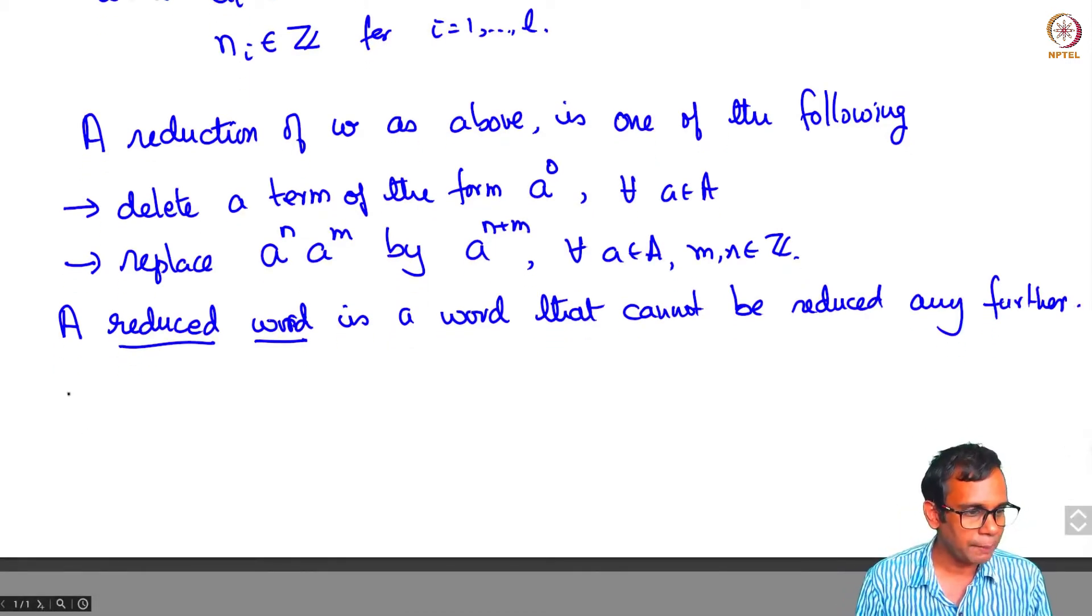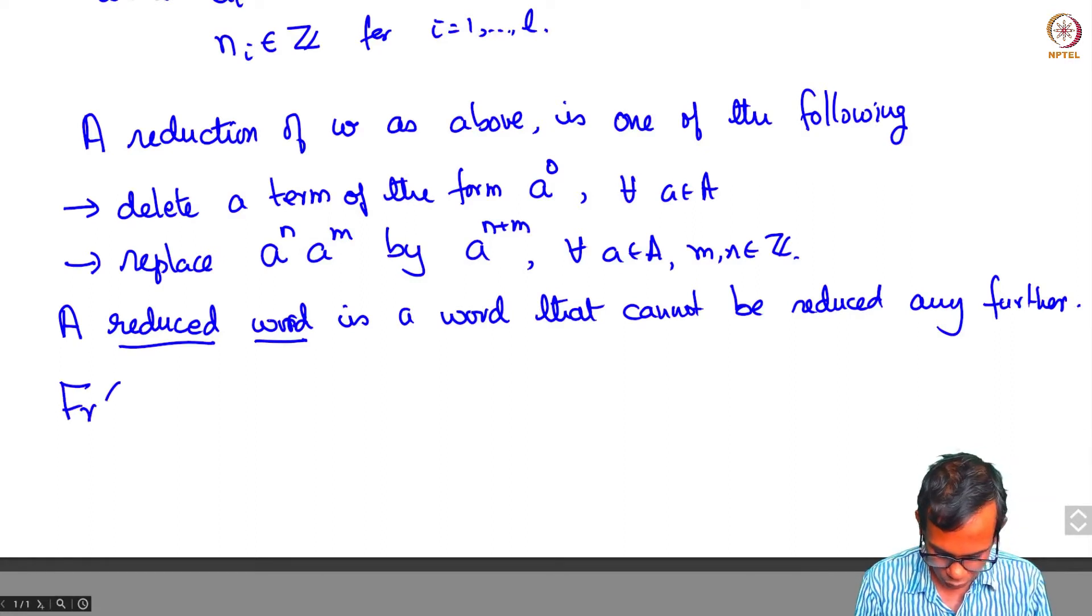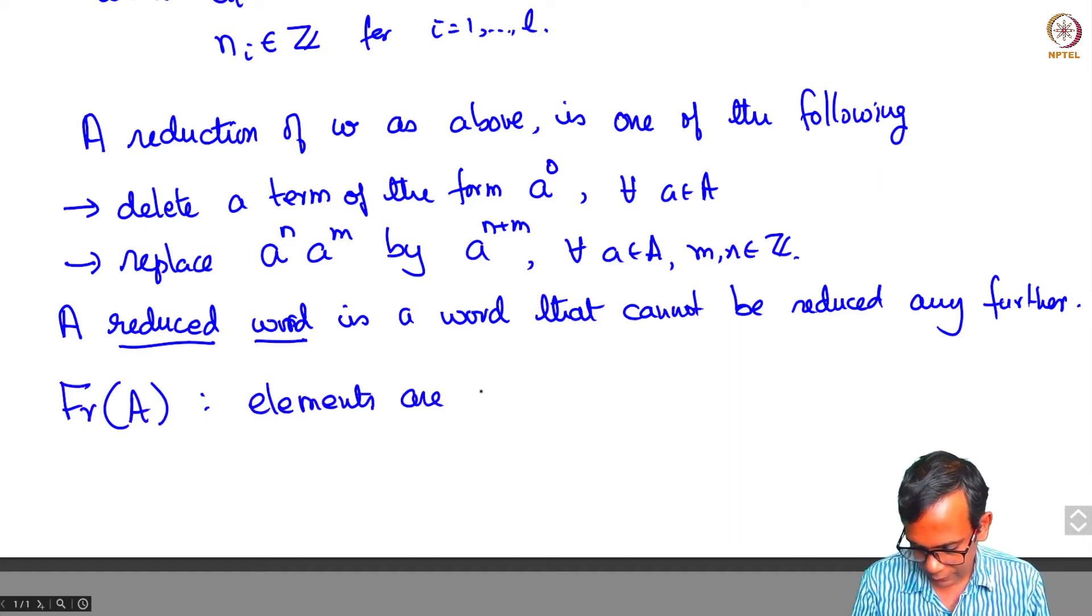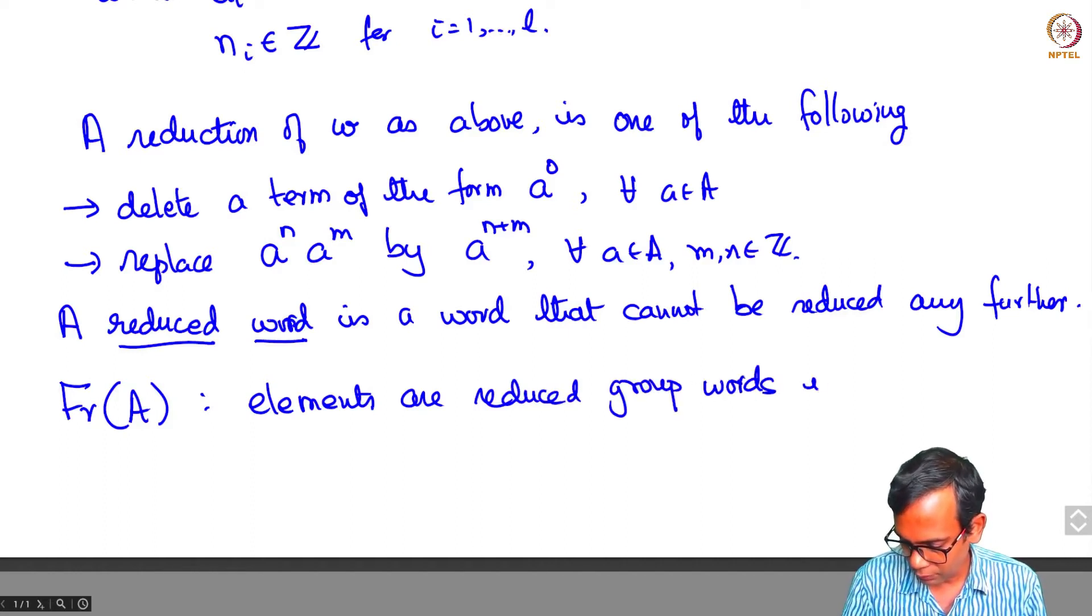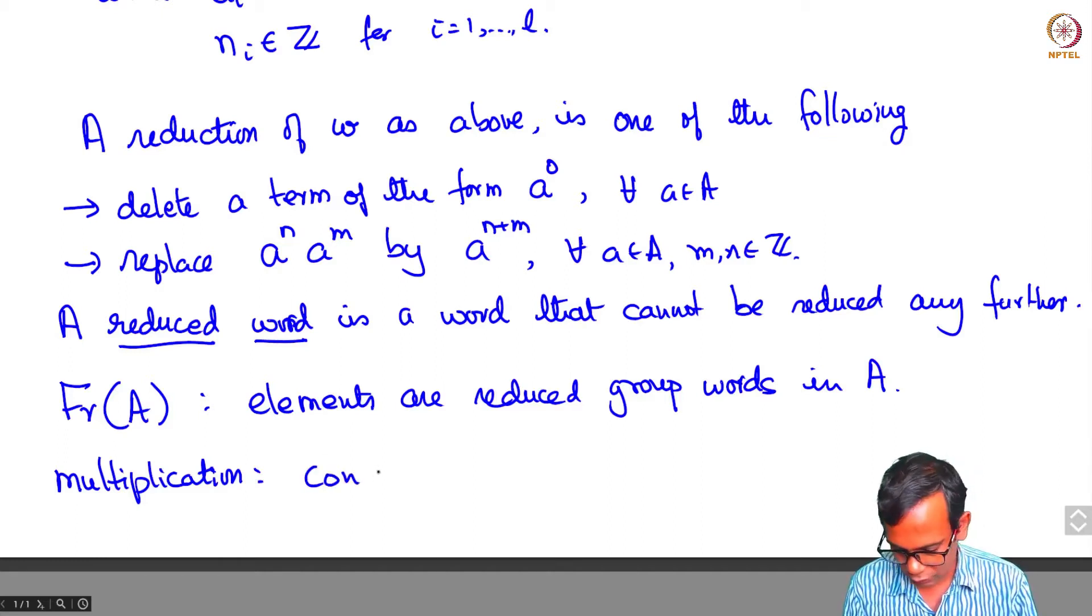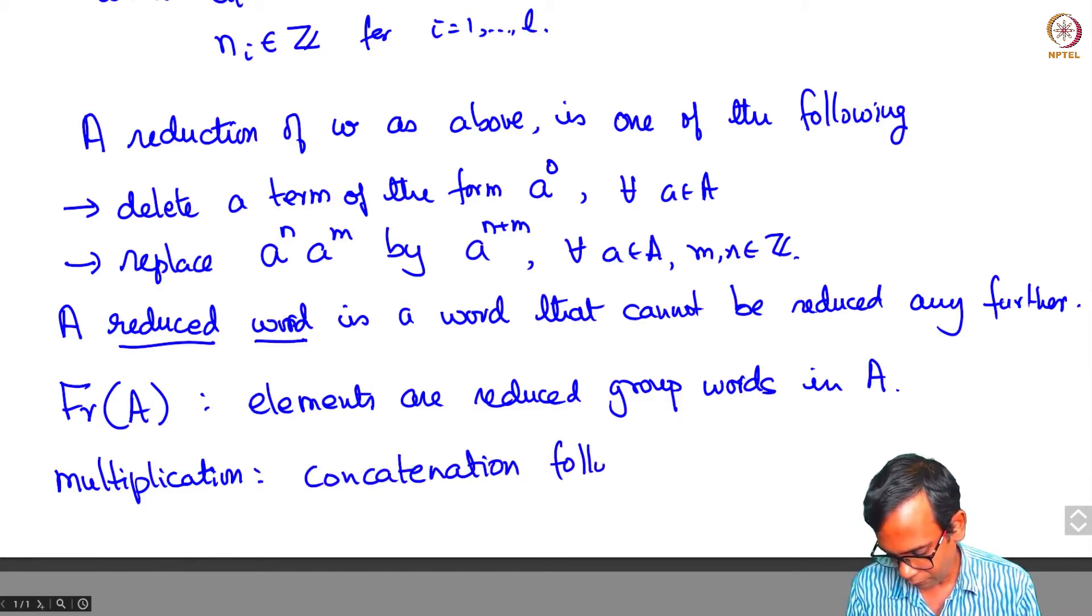So this is called reduction and note that each time you reduce a word you will be reducing L itself. You are reducing the number of terms in the word. And so this reduction process will eventually stop and so every word can be reduced till it can no longer be reduced any further. Maybe you'll get the empty word but certainly you'll reach a stage when you cannot reduce it any further. So a reduced word is a word that cannot be reduced any further. And now the free group of a is defined as follows. Its elements are reduced group words in a and its multiplication operation is concatenation of words followed by reduction.